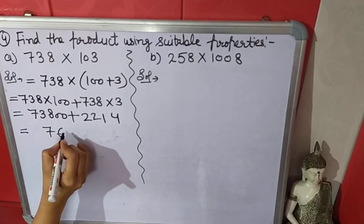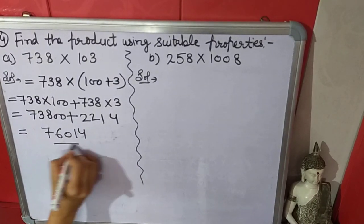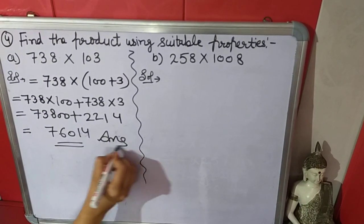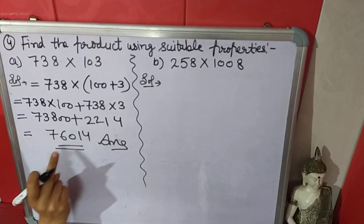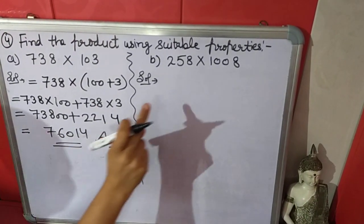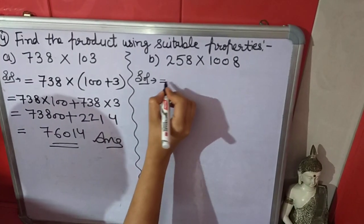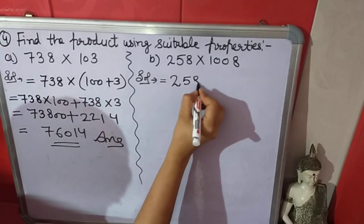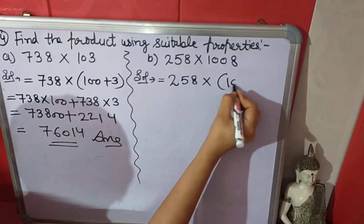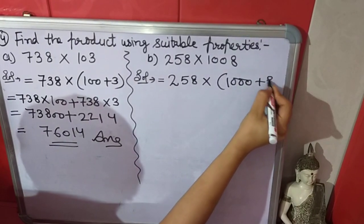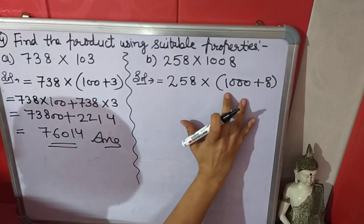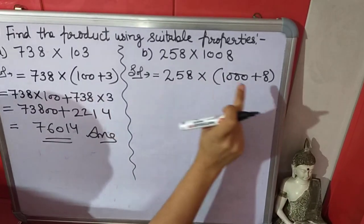This is the product of these two numbers by using distributive property. Now next question is, again we will break this number. 258 times 1008. It will be thousand plus 8. Open this bracket, then this multiplied by a thousand and this will multiply by 8.